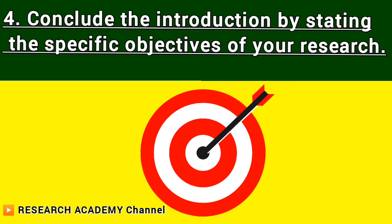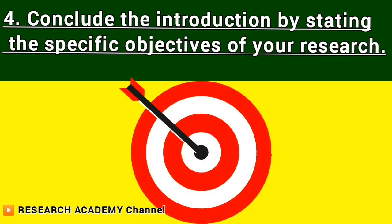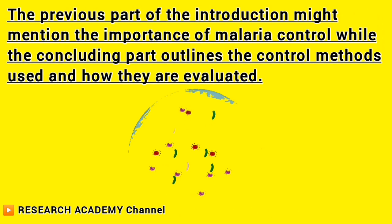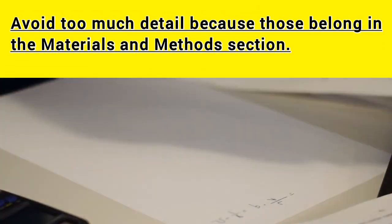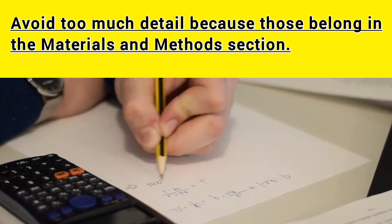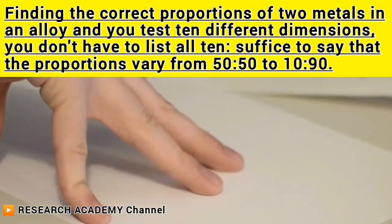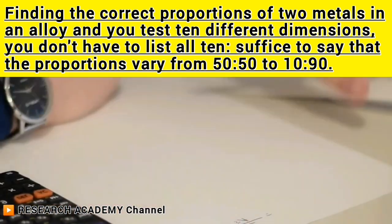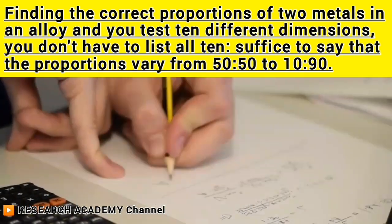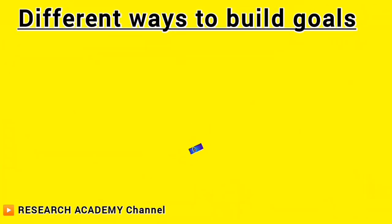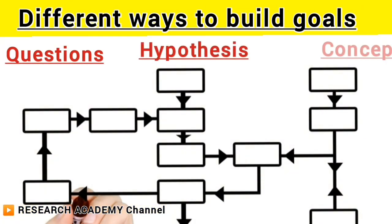Step 4: Conclude the introduction by stating the specific objectives of your research. The preceding paragraphs should logically lead to specific and clear objectives. For example, the earlier part might mention the importance of malaria control, while the concluding part outlines the control methods used and how they are evaluated. Avoid too much detail because those belong in the materials and methods section. If your research tests ten different dimensions of metal alloy proportions, you don't have to list all ten — suffice to say proportions vary from 50/50 to 10/90. The use of questions, hypotheses, and concepts are the most common combinations for building goals.